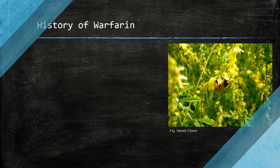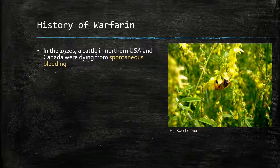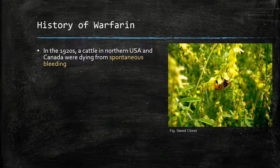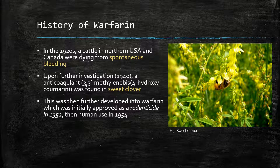A brief history of warfarin. During the 1920s, cattle in northern USA and Canada were dying from spontaneous bleeding mysteriously. On closer inspection, they were feeding on a sweet clover plant which contained a naturally occurring anticoagulant. This was then further developed into warfarin, which was initially approved as a rodenticide in 1952 before being approved for human use two years later.